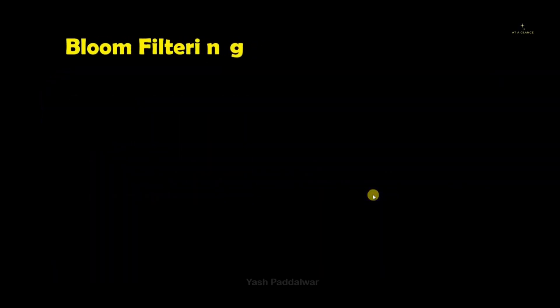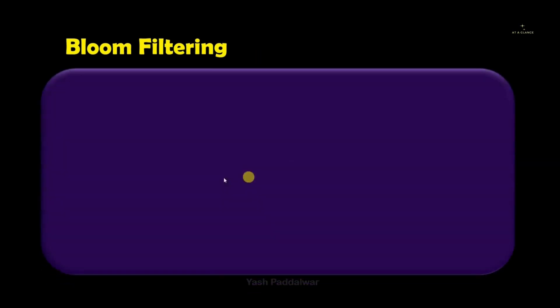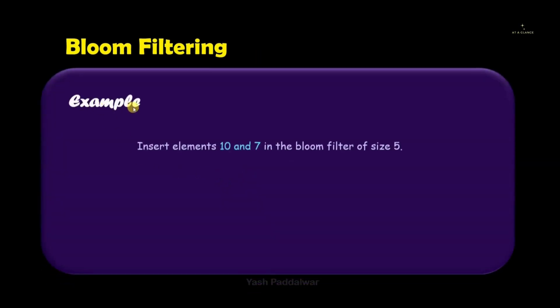If this isn't clear yet, don't worry — we'll be looking into an example which will clear all your doubts. A bloom filter example always contains two steps. The first step is insertion, and the second step checks whether an element is present or not. The question says we have to first insert two elements, 10 and 7, into the bloom filter, and the size of the bloom filter is given as 5.